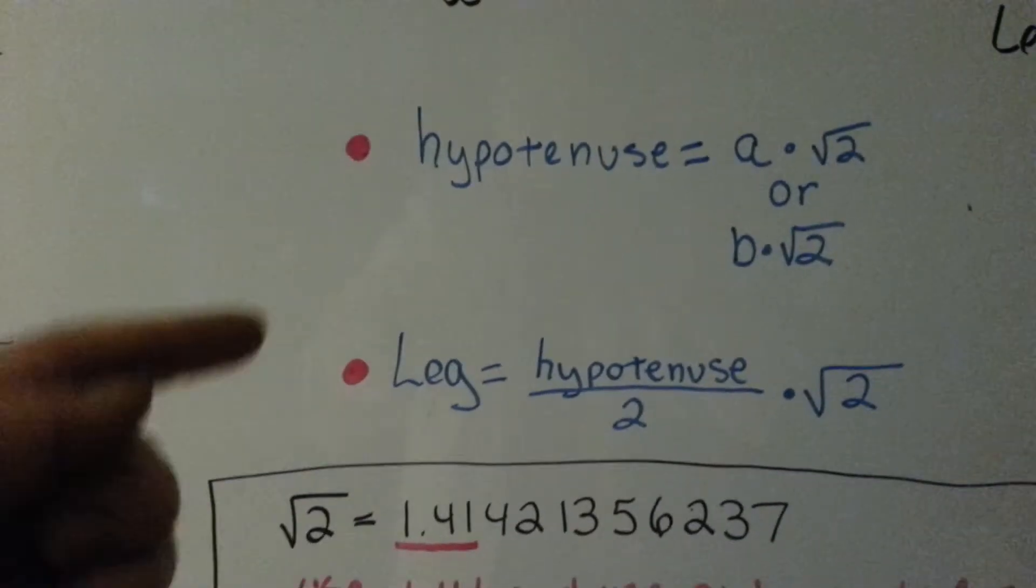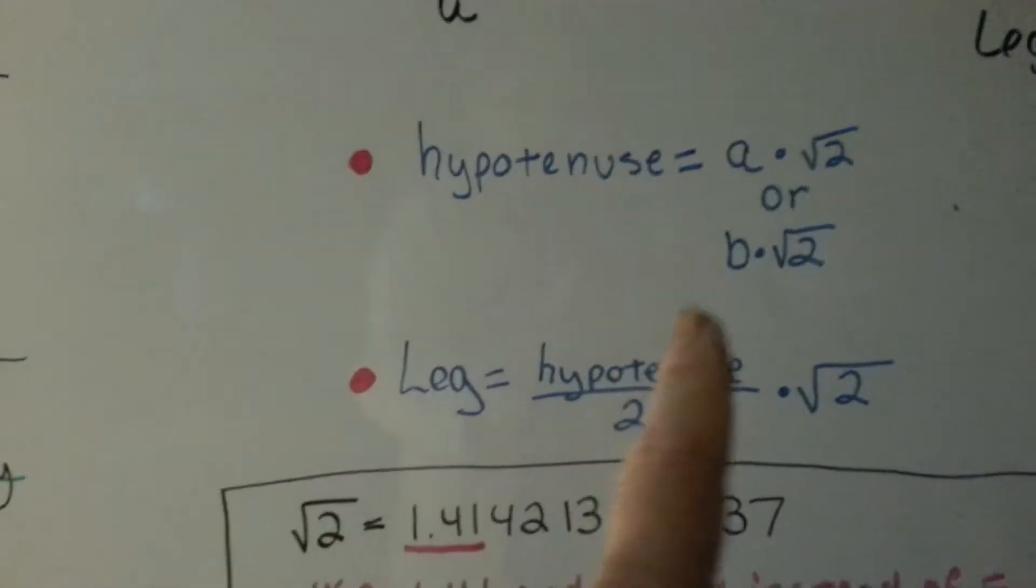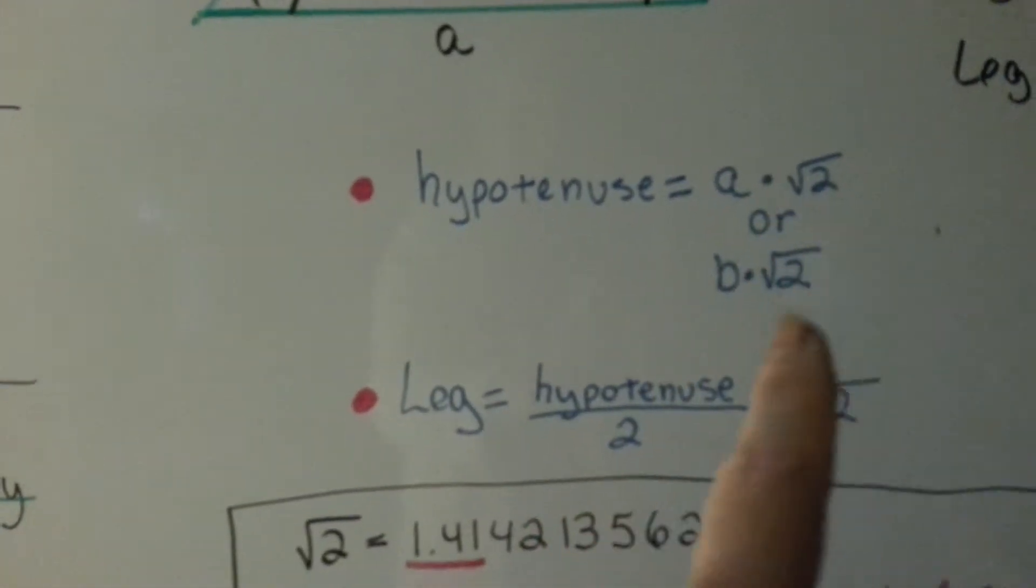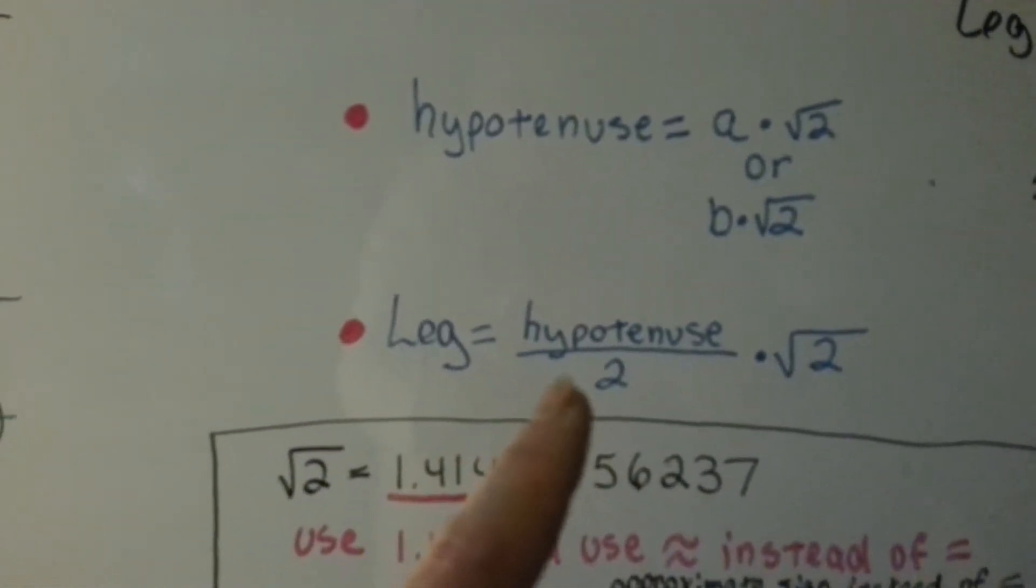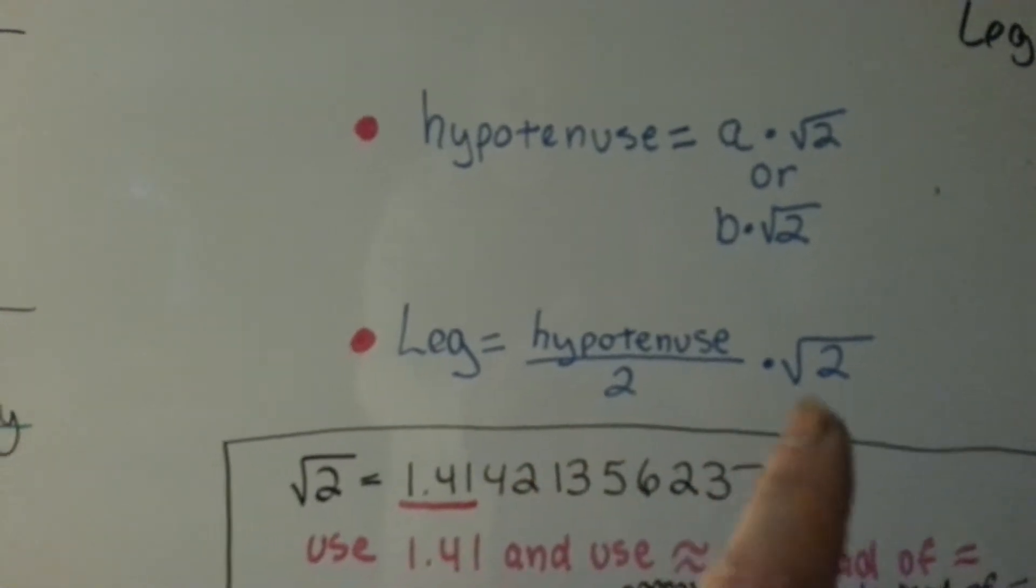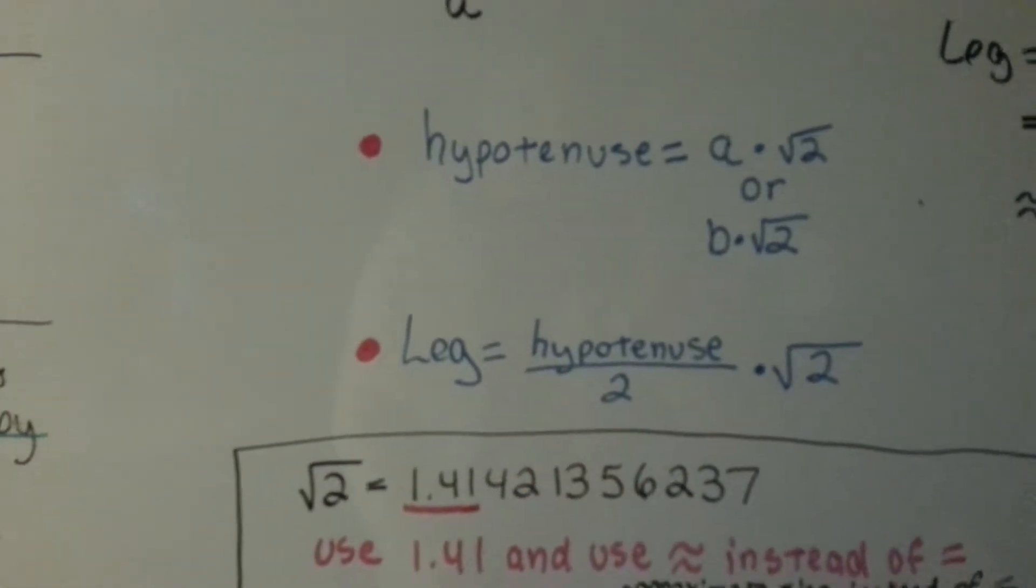So, let's look at this. These are the formulas. To find the hypotenuse, it's A times the square root of 2, or B times the square root of 2. To find the leg, it's the hypotenuse, times the square root of 2, cut in half.